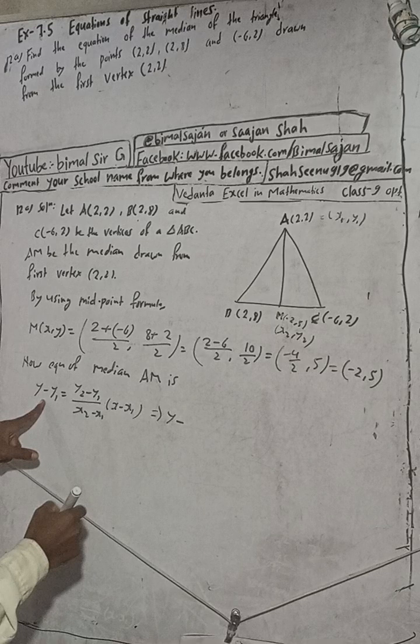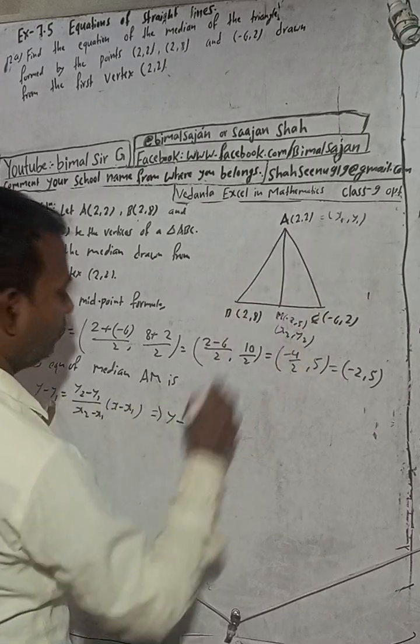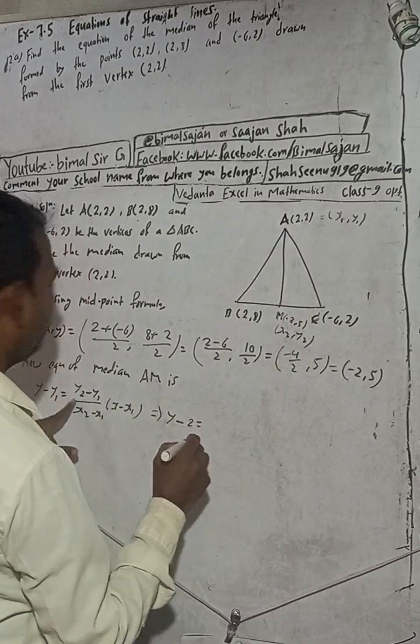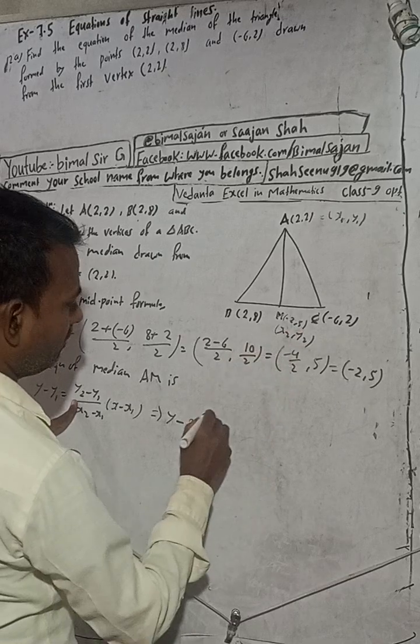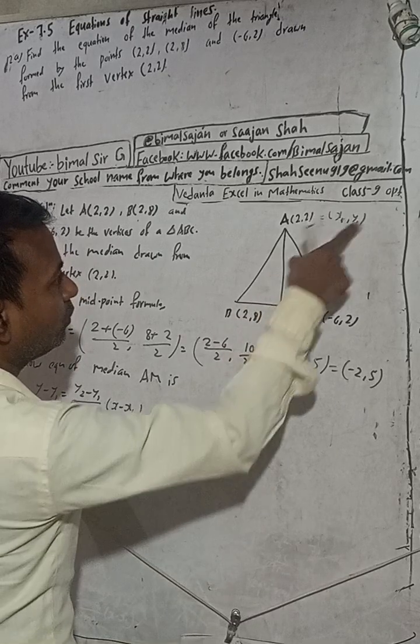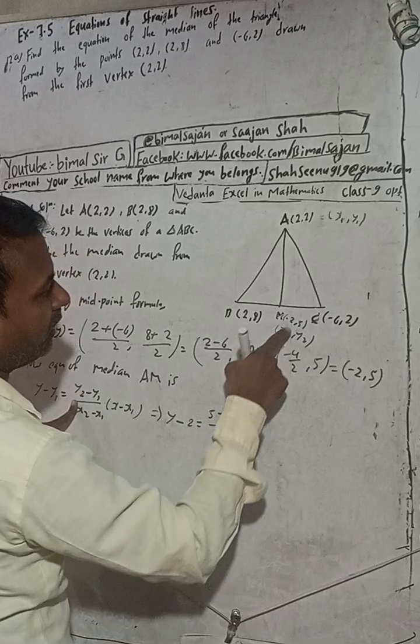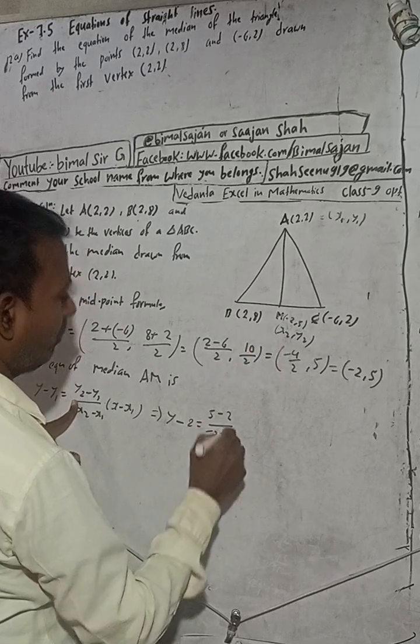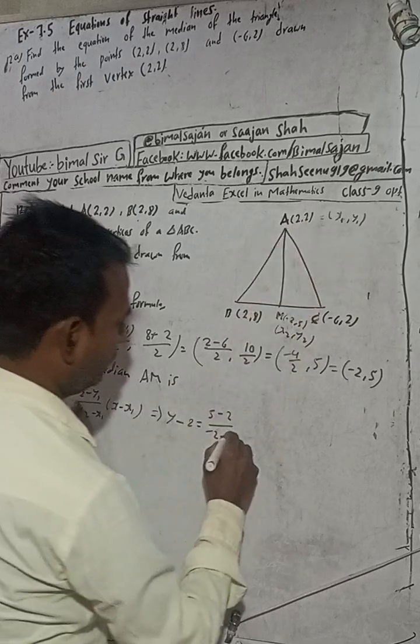Y2 is 5 minus 2. x2 minus x1, so x minus x1 is x minus 2.